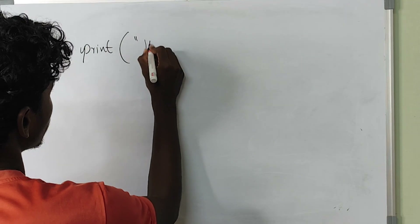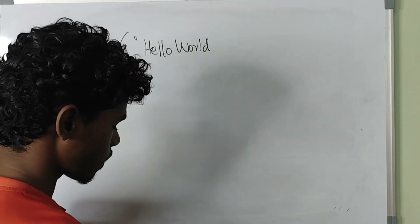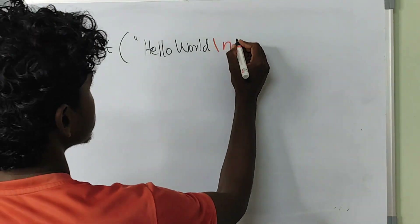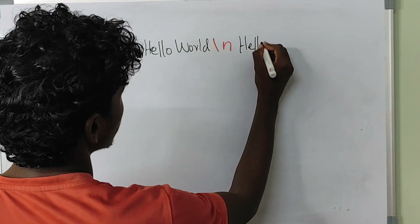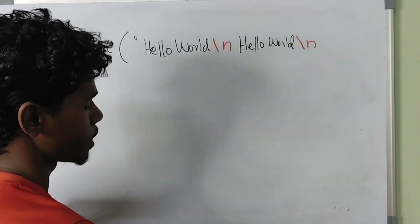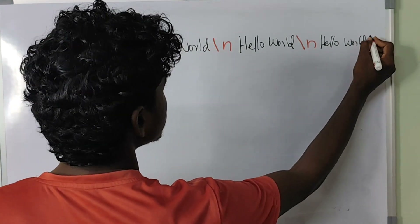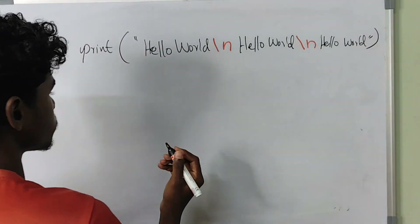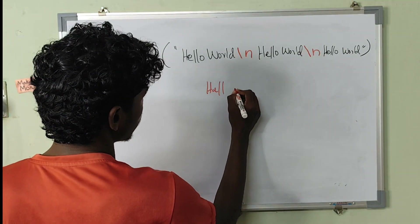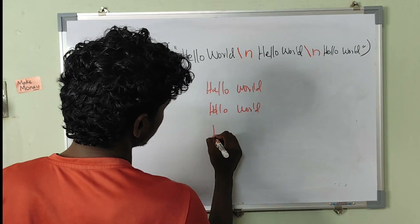We type in this video. Then we will use the next line. Then we type in this video. We use the same line. We type in this file. Then we will type in this line. We tab in this file, then we will close. This is the file. Let's see how we show this — Hello world, hello world, hello world.